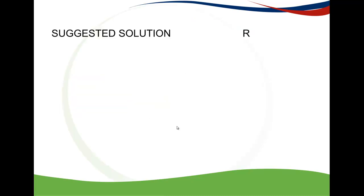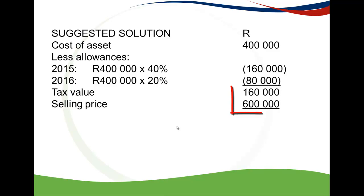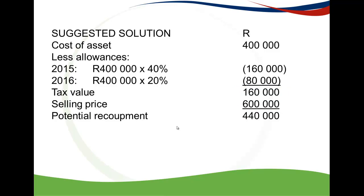We calculate the tax value first. The cost of the asset is still R400,000, and from that we deduct the allowances: a 40% allowance in 2015 and a 20% allowance in 2016, leaving us with the tax value. We compare this to the selling price of R600,000. The selling price is more than the tax value, so we have a potential recoupment. The potential recoupment is R440,000.